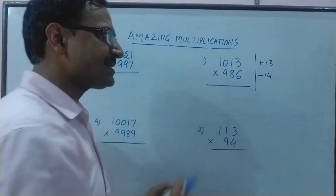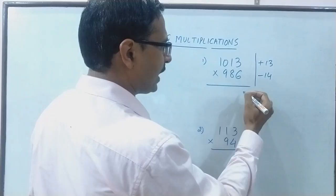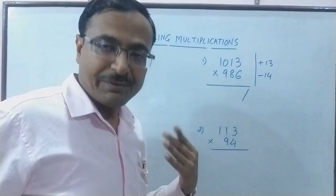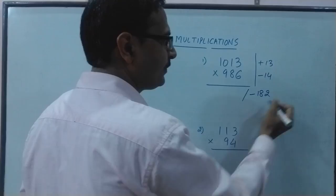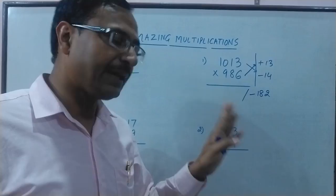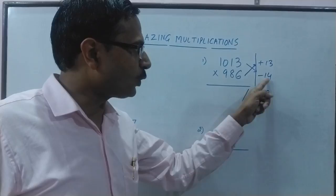Now what you do here is to write two parts of the answer. One part will be obtained by multiplying these numbers. 14 into 13 will be very easy because 13 into 10 is 130 and 13 into 4 is 52. So 52 plus 130 is 182. So this will be minus 182 here.